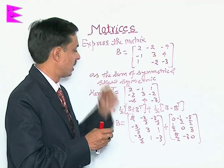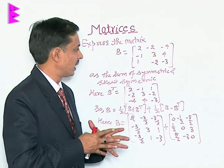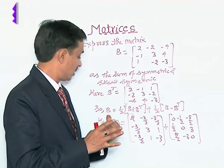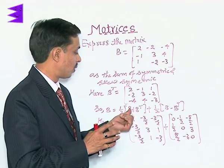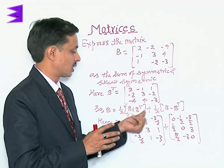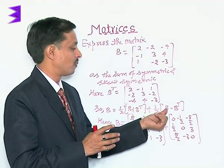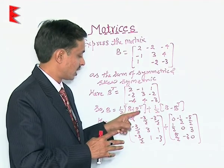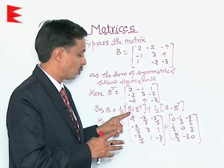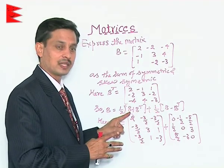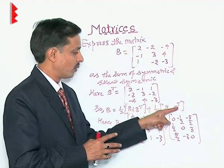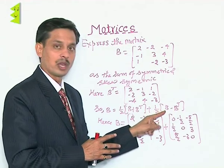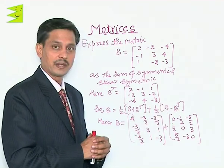Now we have B and B transpose. We know that B equals half of (B plus B transpose) plus half of (B minus B transpose), because when the transpose is added to the square matrix it yields a symmetric matrix, and when the transpose is subtracted from the square matrix it yields a skew-symmetric matrix.